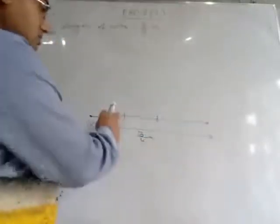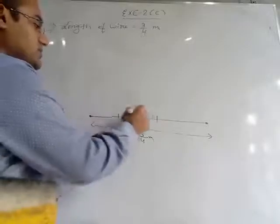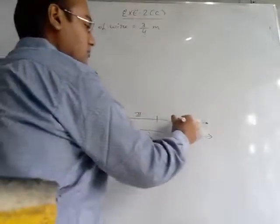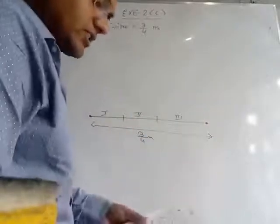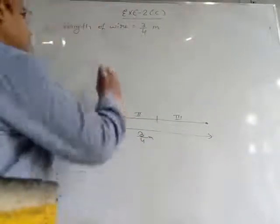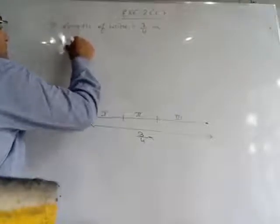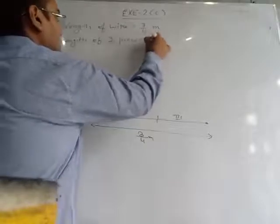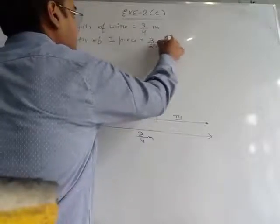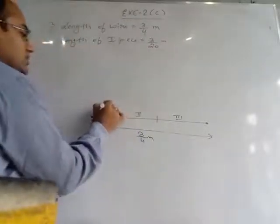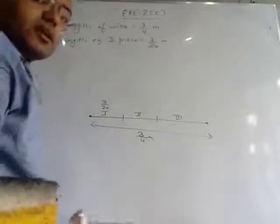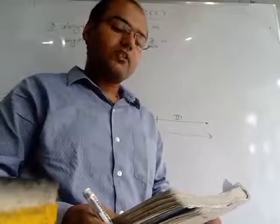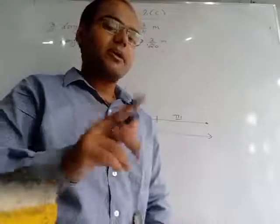From the rope we made 3 parts: 1st part, 2nd part, and 3rd part. The length of the 1st piece was 3/20 metre. We write: length of 1st piece = 3/20 metre. Now what is the 2nd length? The length of the 2nd piece was 5/3 of the 1st piece. The unit is not given, so this is a fraction, not a length directly.